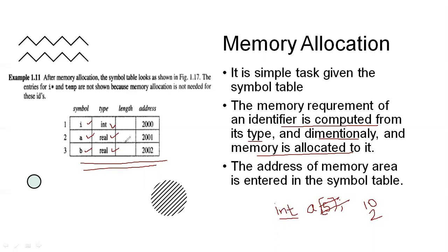The type of each identifier is listed in the symbol table. The length field is considered as 1 for each, and addresses are given as 2000, 2001, and 2002, assuming int and real each take only one memory space. So i's address is 2000, a's address is 2001, and b's address is 2002. Note that i* and temp are not shown because memory allocation is not needed for these identifiers.